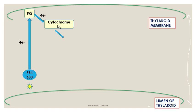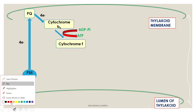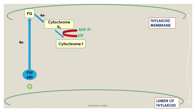Cytochrome B6 is also present on the wall of the thylakoid. It gets excited and gives the electron to cytochrome F. When electrons are passed from cytochrome B6 to cytochrome F, ADP plus inorganic phosphate — with the help of ATP synthetase enzyme — synthesizes the first ATP molecule. This is the first ATP molecule synthesized in non-cyclic photophosphorylation.